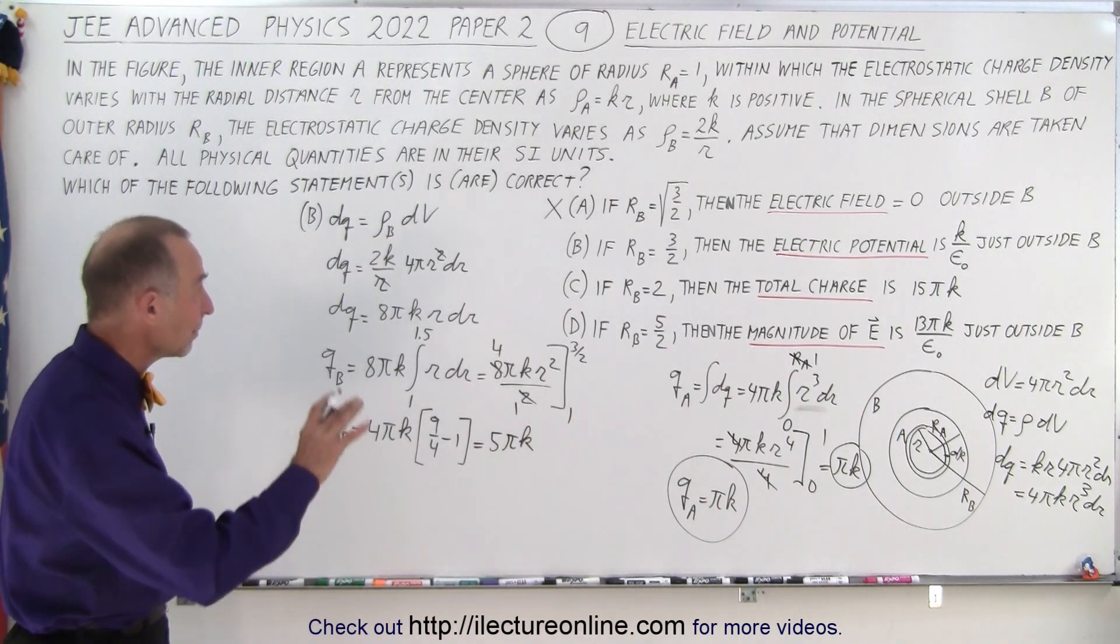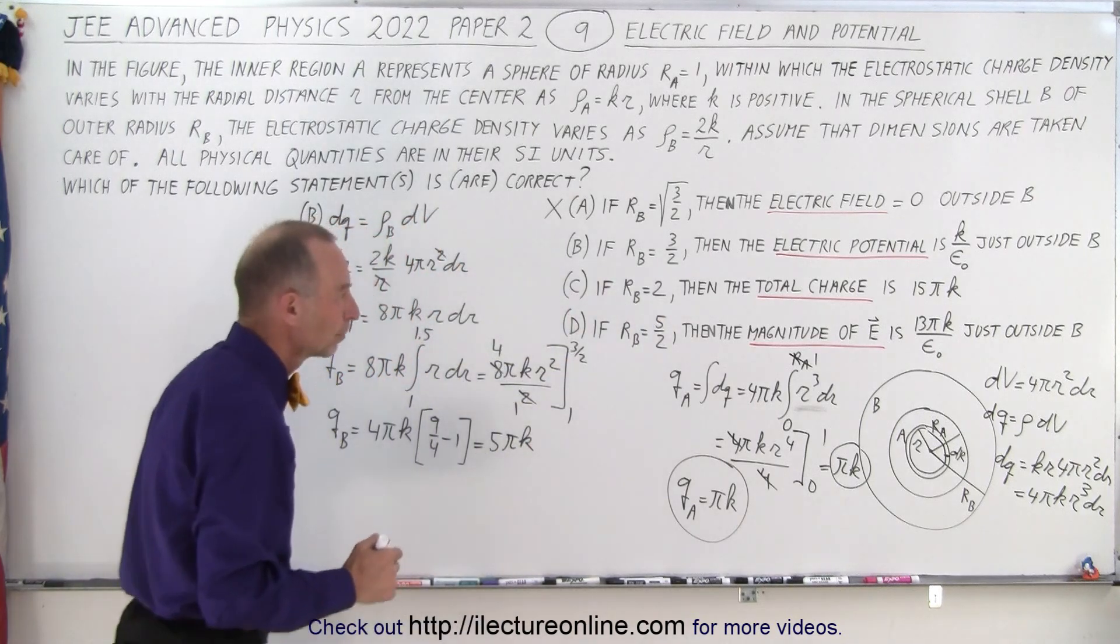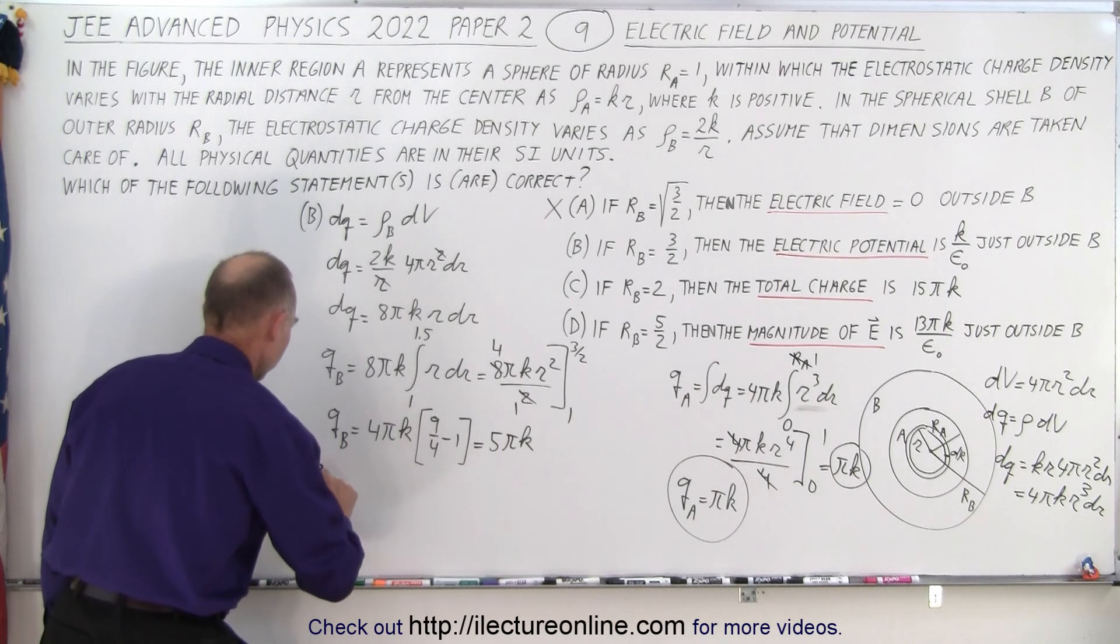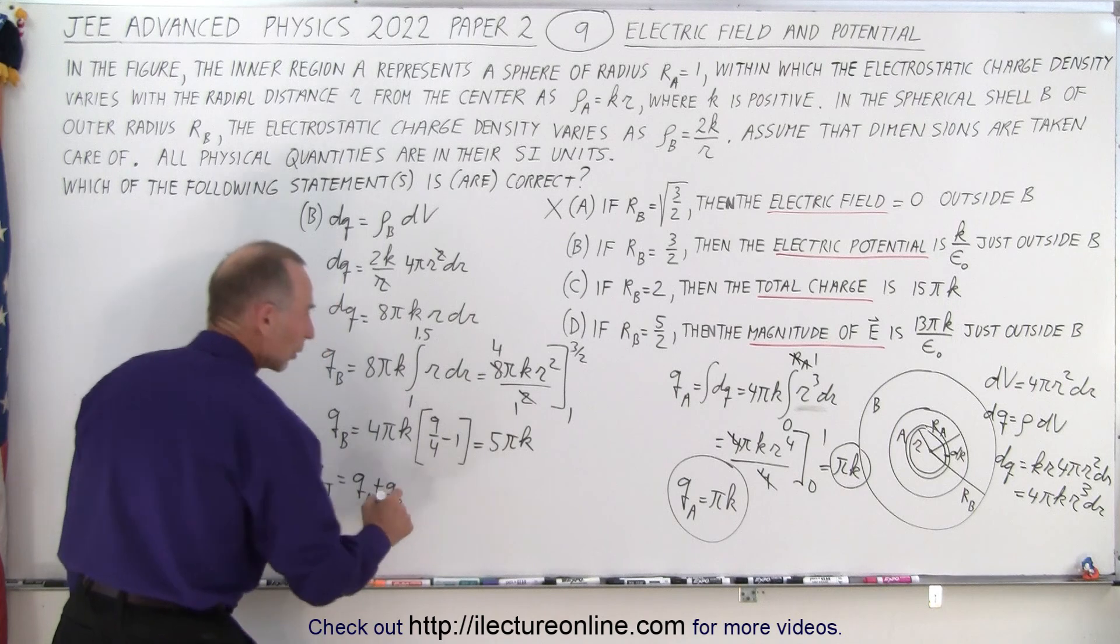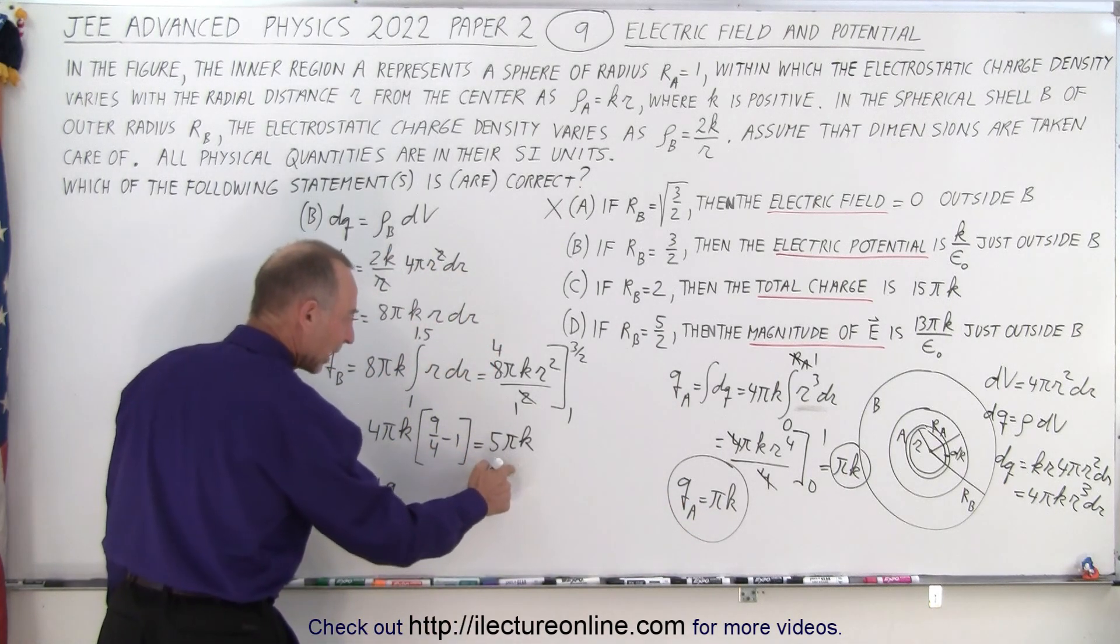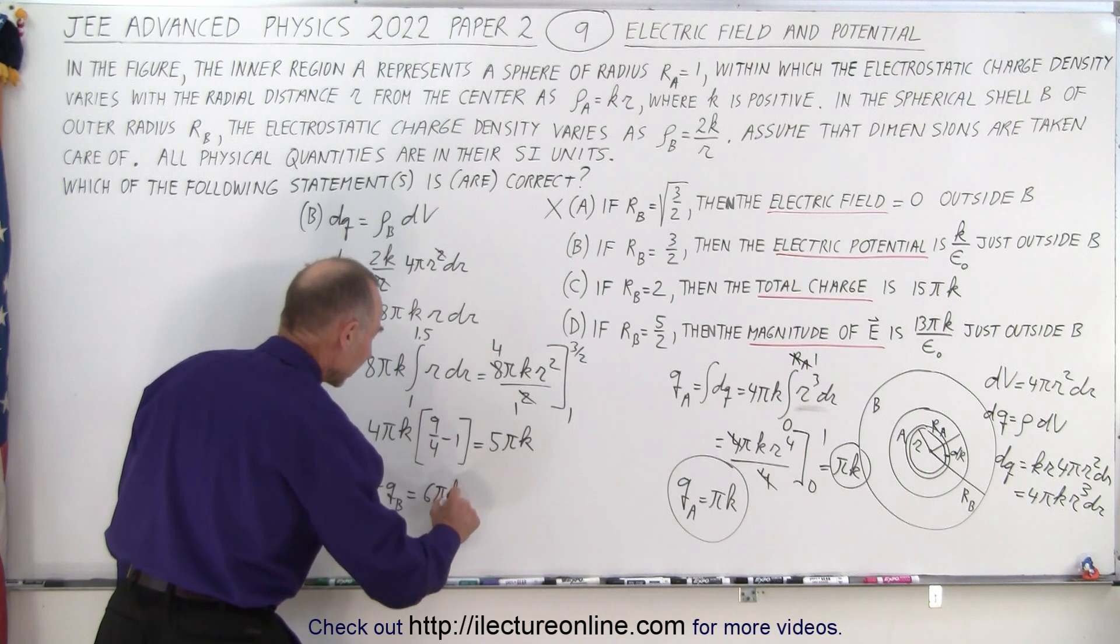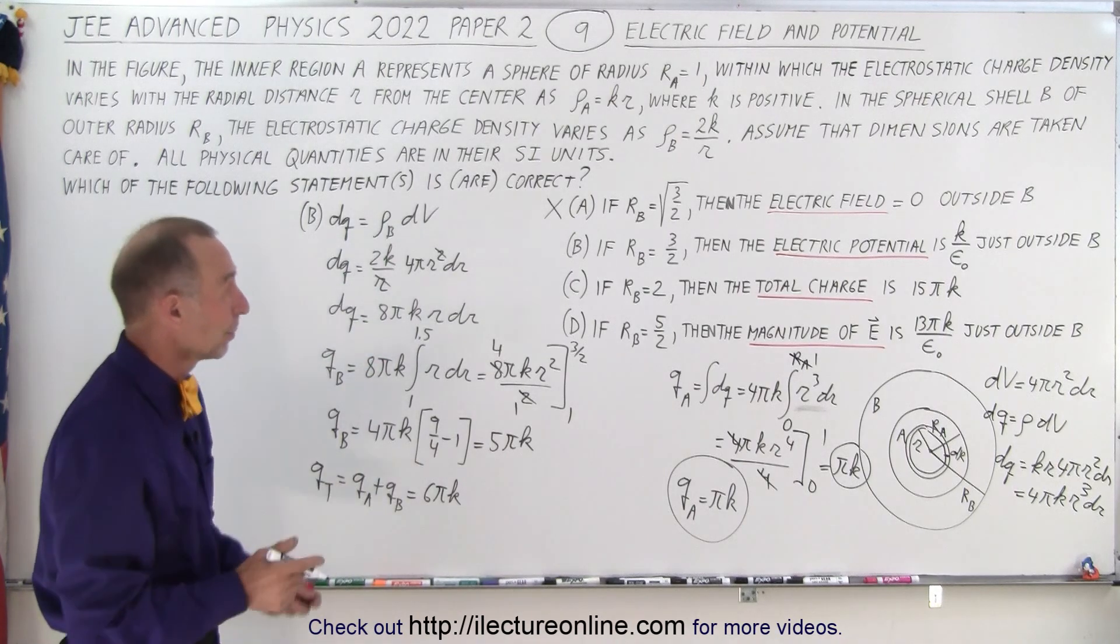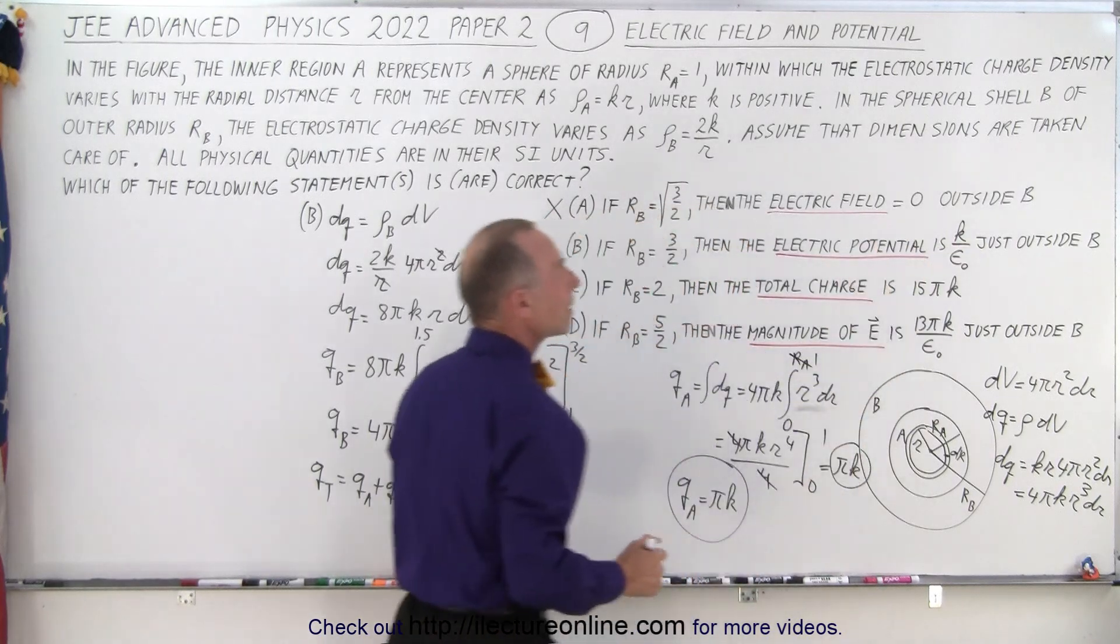Okay, so that is the charge in B, if the radius is 3 over 2. So then we want to combine the 2, so that means q total is equal to qA plus qB. Now for qA we got pi k, for qB we got 5 pi k, add them together we get 6 pi k. Alright, so that is the total charge inside both A and B combined.